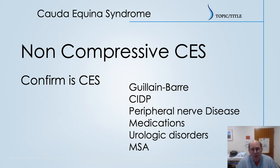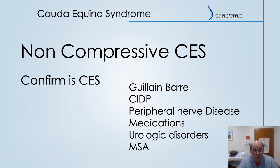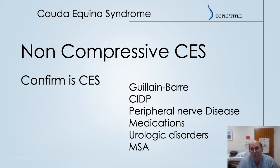This lists some conditions that can mimic cauda equina. Guillain-Barré and CIDP are inflammatory neuropathy conditions — inflammation in the peripheral nerves of the arms and legs. This is different from cauda equina because it's not a disease confined just to the cauda equina; you get it at that level but also at other levels, so it's a peripheral nerve disease. There are also certain medications that can affect bowel and bladder function, causing side effects that may make someone think they have cauda equina syndrome.